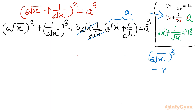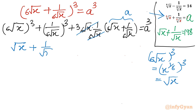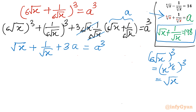The 6th root terms cancel in the 3ab factor, and x^(1/6) cubed equals x^(1/2), which is the square root of x. So we get: square root of x plus 1 over square root of x, plus 3a equals a cubed. Since we know square root of x plus 1 over square root of x equals 198, we substitute to get 198 plus 3a equals a cubed.